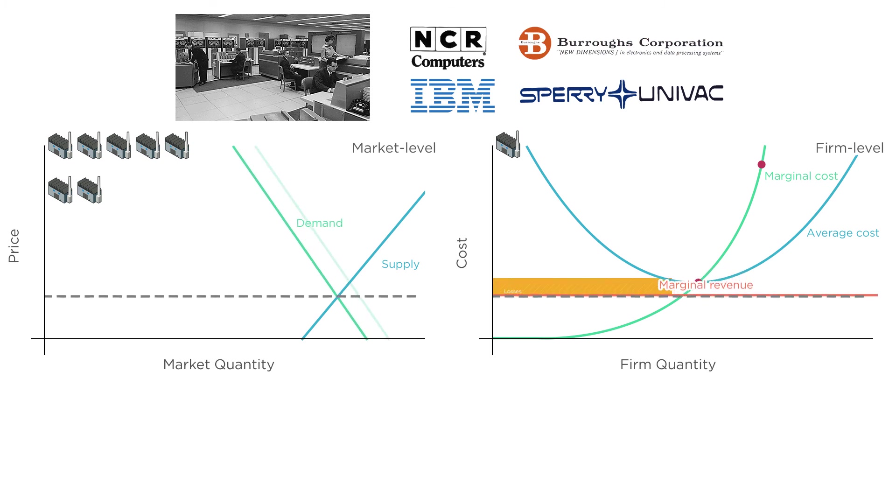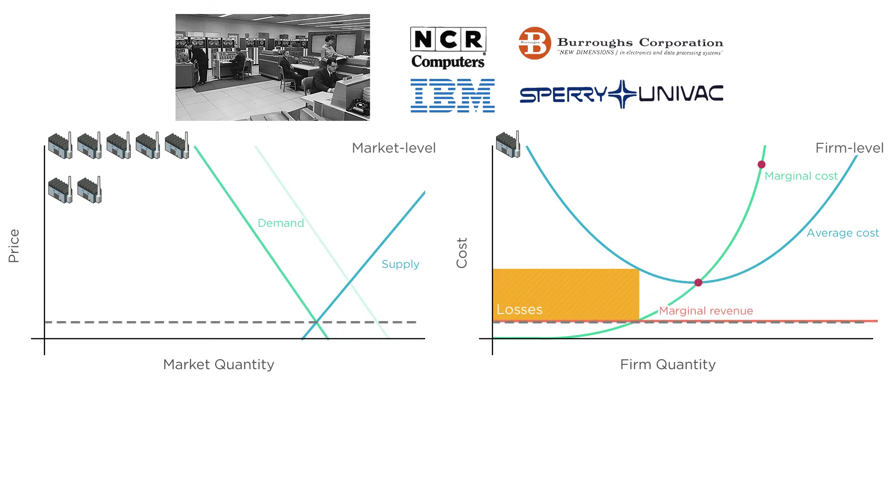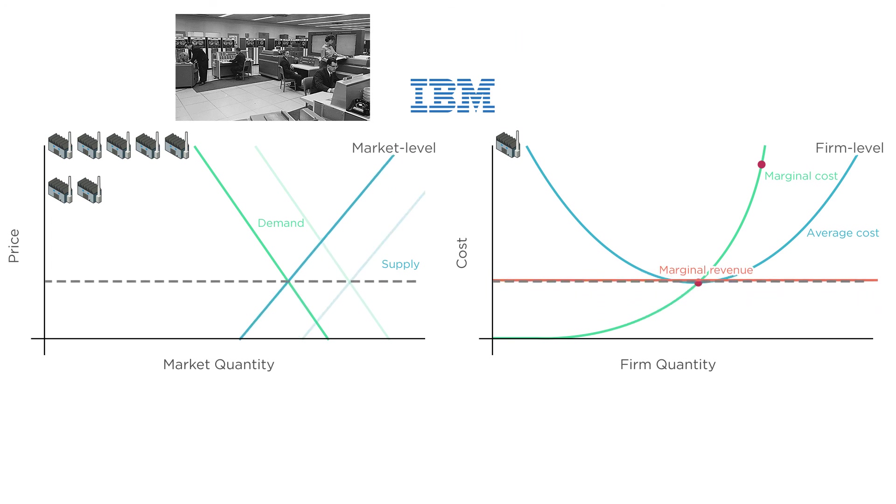This is represented as a drop in demand. The demand curve shifts to the left. Price drops. Firms that were once making zero profit are now losing money. Eventually, firms start to drop out, so supply shifts to the left. Price goes back up, although fewer mainframes get sold. Profits go back to zero.